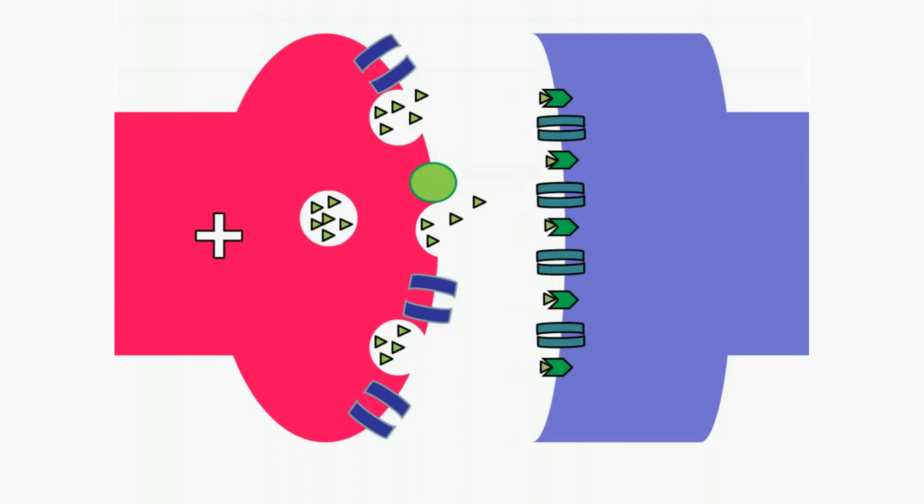These signals are known as neurotransmitters and are responsible for initiating a new electrical signal for transmission in the postsynaptic cell. There are many different neurotransmitters that are employed by our brain, including epinephrine, which is sometimes known as adrenaline, serotonin, and dopamine.